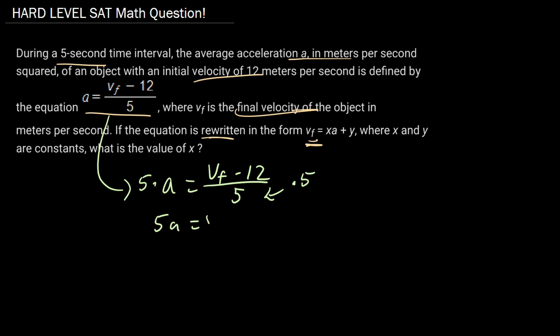So we have 5a equals vf minus 12, and we can isolate this vf by just adding 12 to both sides. And we get vf, after we switch the sides here, switching right to left, vf equals 12 plus 5a.